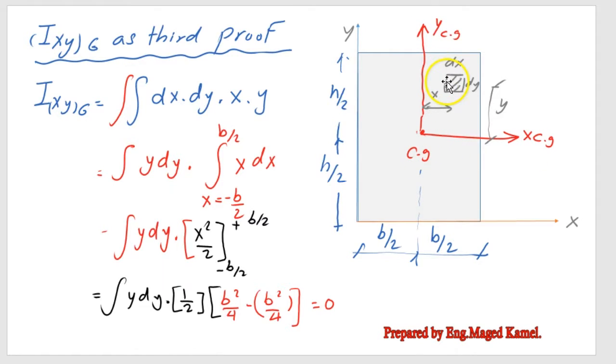But this time our strip will be a small strip with width equal to DX and height equal to DY, and we are going to estimate the horizontal distance as X to the Y_CG and Y to the X_CG.